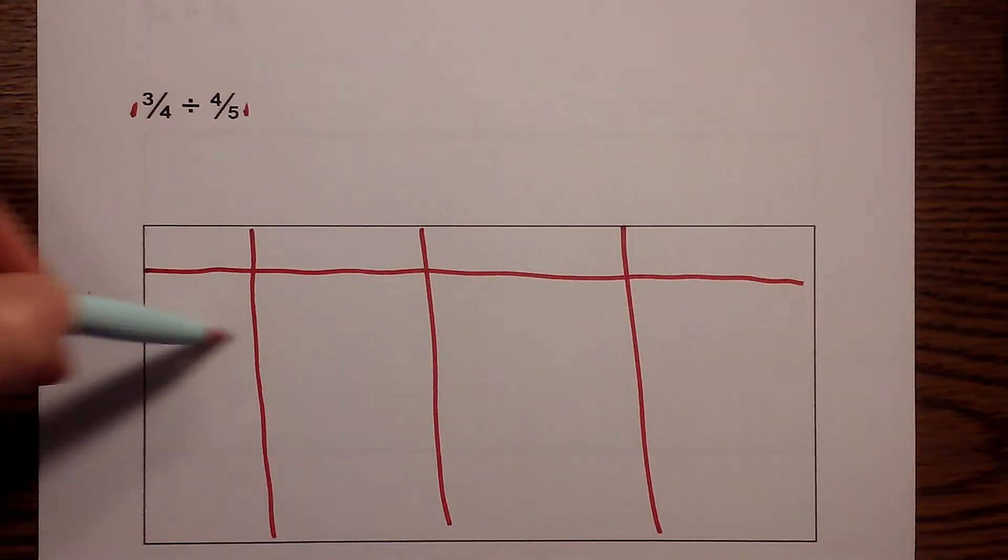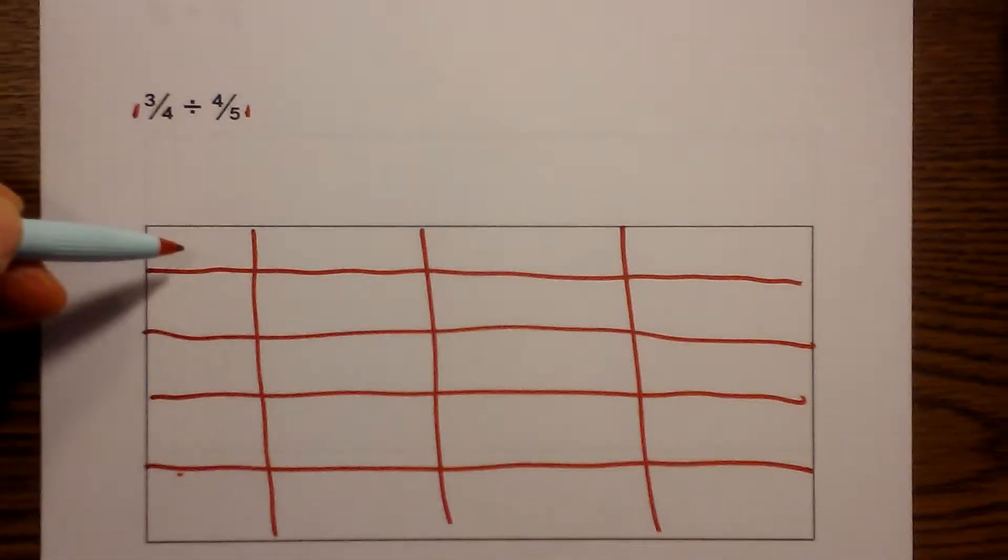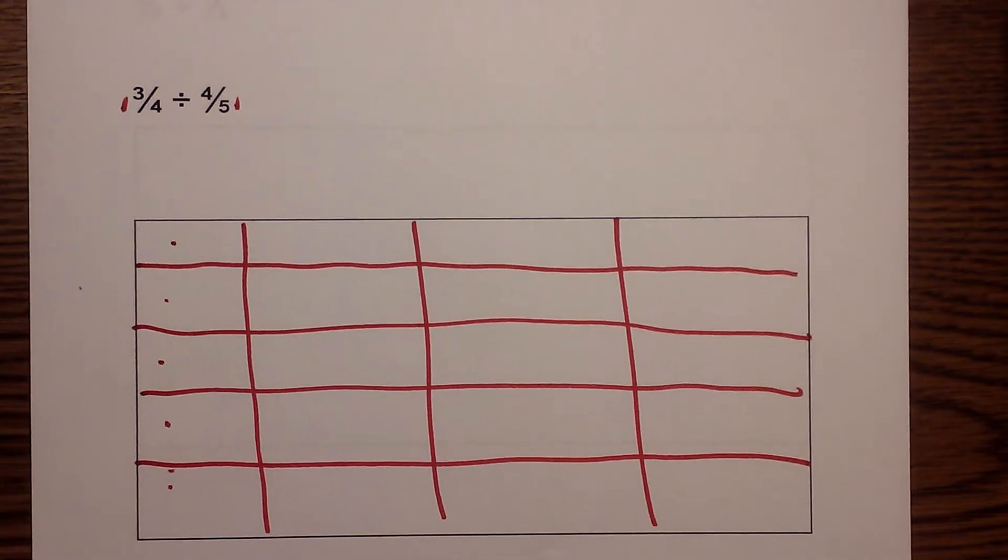So there's 1, 2, 3, 4 and that should give me 5 rows. 1, 2, 3, 4, 5. That's step 1.